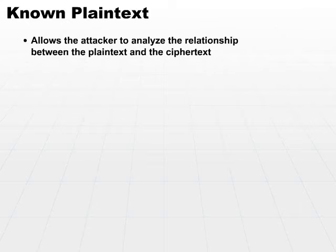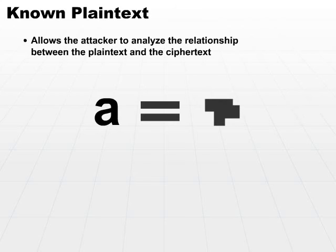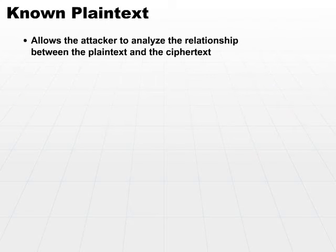It would be unusual for an attacker to already have a copy of the before and after, which means that some compromise has already occurred in order to fetch the original plain text. However, once that occurs, you can then analyze it and figure out if there is a frequency distribution issue — where you can find out if the number of letter A's correspond to some transposition or some pattern in the ciphertext. The more sophisticated algorithms remove and diffuse any type of pattern such as this, but the known plain text attack may work on some of the simpler algorithms.